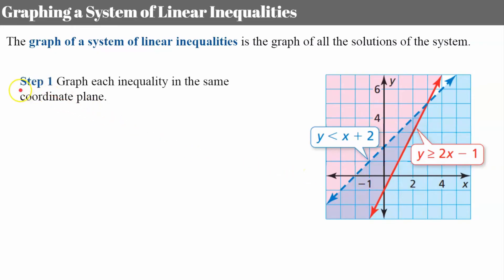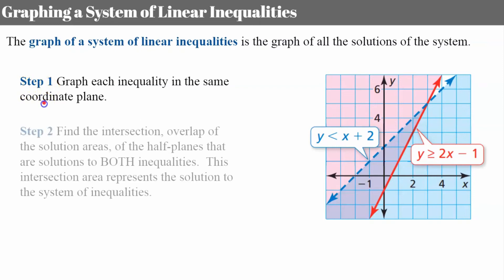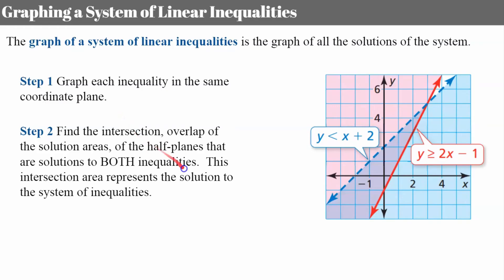So we go through a process. Step one: graph each inequality in the same coordinate plane identifying their half plane solution areas. Step two: find the intersection or overlap of the solution areas, which becomes very clear once you've graphed the second inequality and shaded in its half plane solution set.